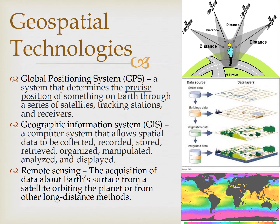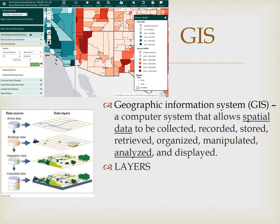Our next system is the Geographic Information System, or GIS, which is a computer system that allows spatial data to be collected, recorded, stored, retrieved, organized, manipulated, analyzed, and displayed. It's the analysis piece that is especially meaningful. GIS is sophisticated mapping software that places layers of data onto one another to allow us to examine relationships that exist in space between different attributes. This can then be used to conduct research or address problems. One common use of GIS involves comparing natural features or topography — the shape and features of land surface — with human activity, such as flood potential or industrial pollution levels.